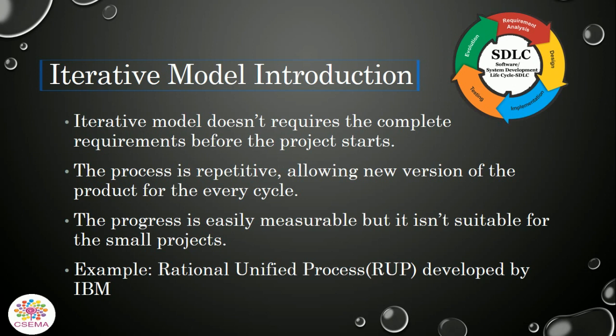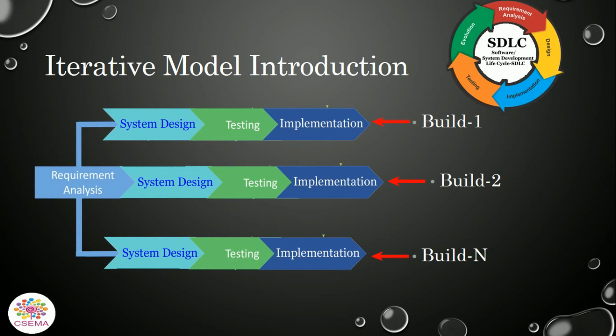The ATT model uses phases to develop a software process, and this process is repeating, allowing new versions of the product for every cycle. The process progress is easily measurable, but it isn't suitable for small projects because it is used to develop large products or long-term projects. An example of ATT models is the Rational Unified Process, developed by IBM. Here are the ATT model phases.